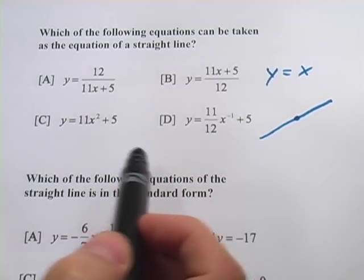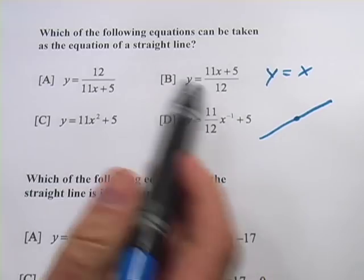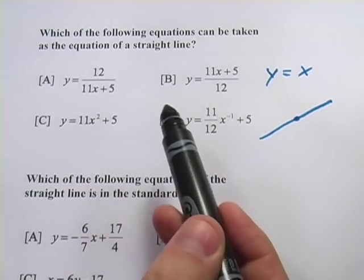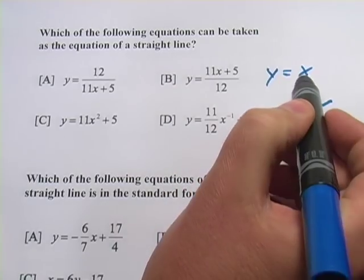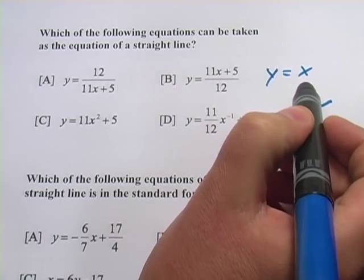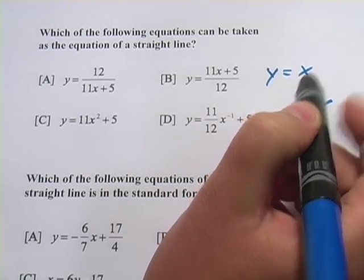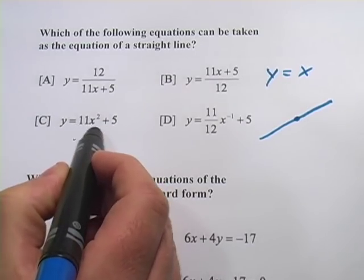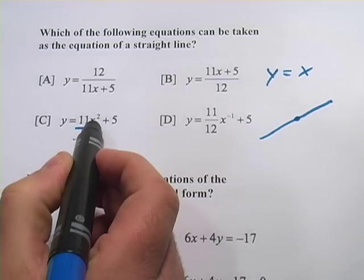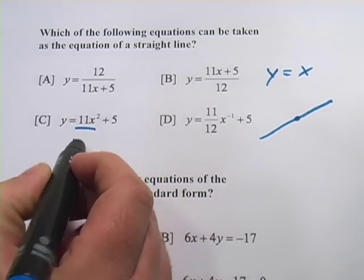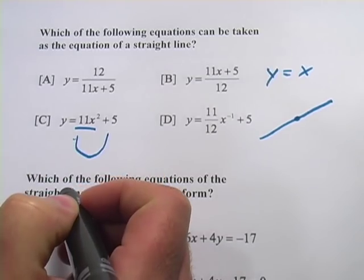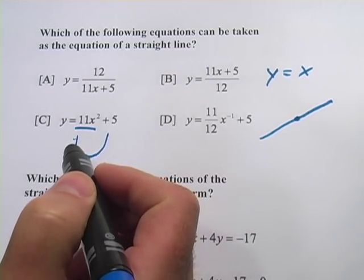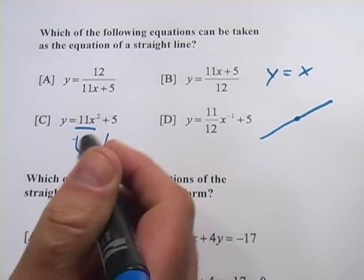In this first problem, they're asking you to pick out which of these equations could be a line. And there's only one of them. And the rule of thumb here is that the x needs to be just to the first power. So if you look at C down here, we have y equals 11x squared plus 5. You should recognize that by now. That's a quadratic equation, so it's going to have that U shape, not a straight line. So basically, any power other than 1 is not going to work, is not going to create a straight line.